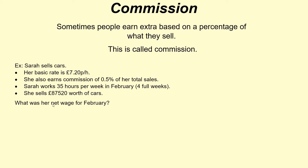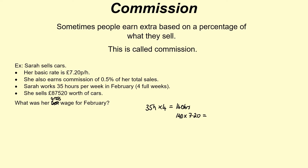Her gross wage for February is the total before any deductions — before any tax or national insurance — and that's what we're looking for here. How many hours is she going to work? She works 35 hours per week for four weeks, so 35 times 4 gives 140 hours. Her basic rate is £7.20, so we take 140 and multiply by £7.20. That gives us £1,008 — her basic gross pay before any commission or deductions.